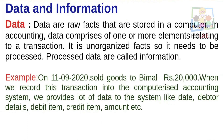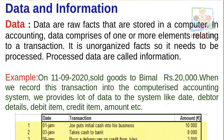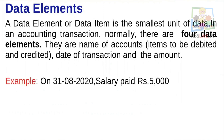When we record a business transaction into the computerized accounting system, we provide a lot of data to the system — like the date of the transaction, details, debit item, credit item, amount, etc. These parts of the transaction are the data elements. A data element, or data item, is the smallest unit of data.